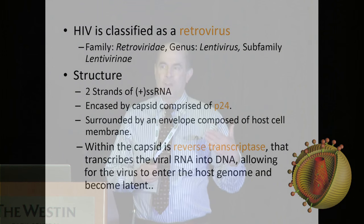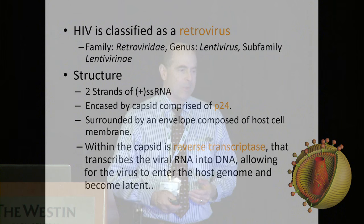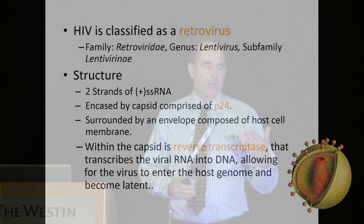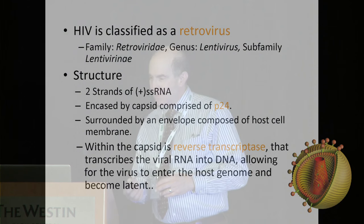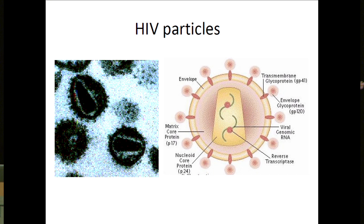The virus is a retrovirus of the lentivirus family. It has double-stranded RNA, and the RNA is encoded by a protein called P24. P24 will come into play when we talk more about the actual testing for HIV. There are other proteins — the outer protein is known as GP120, and the part that spans the viral envelope is called GP41.